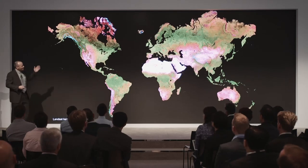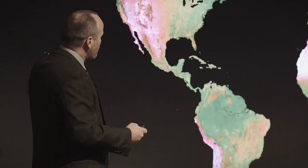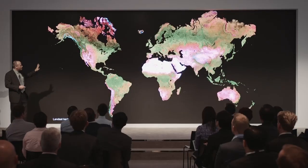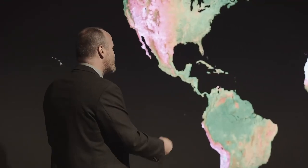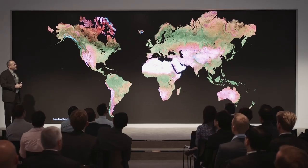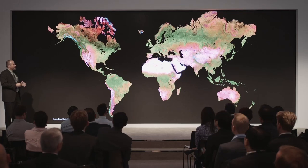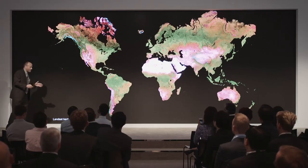This is an example of a cloud-free global image using big data processes where we start with a million images, filter through all of them, throw away the clouds, throw away the smoke, and try to examine only the land surface. By tracking the really good pixels of the land surface, we can turn this into a measurement of forest extent and change. Very importantly, big data and its use for societal good is based on really progressive data policies.